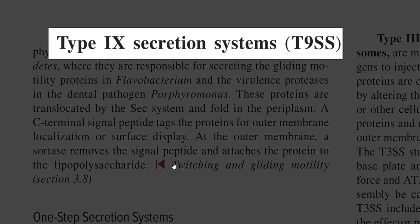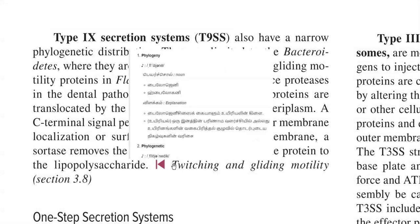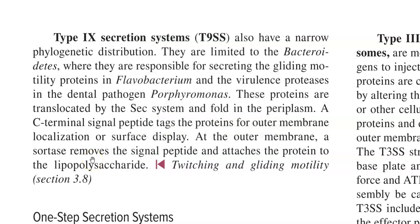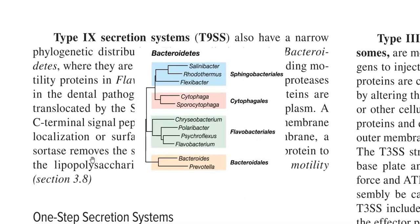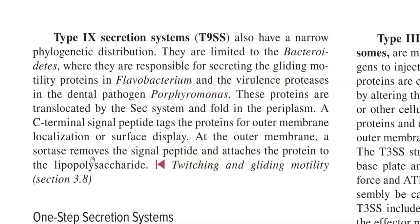The last under this category is the Type 9 secretion system, which has a very narrow or limited phylogenetic distribution — only a few groups of bacteria house this secretion system. For example, members of the Bacteroidetes express this system for secreting gliding motility-related proteins, the classical example being secretion of gliding motility proteins in Flavobacterium.